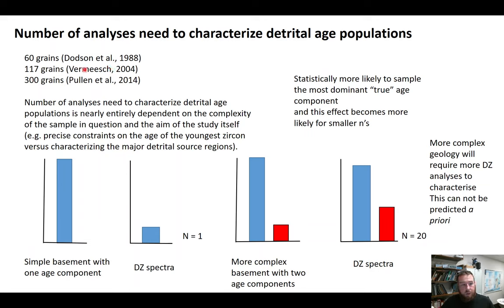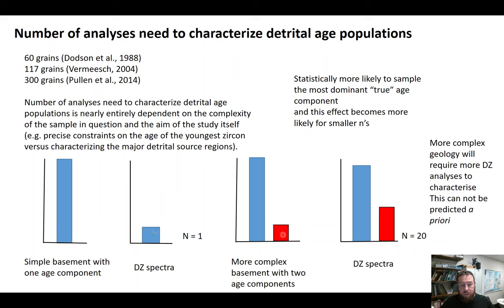For example, in 1988 a good rule of thumb was 60 grains; by 2004 we wanted 117 grains; and more recent work in 2014 says 300 grains are necessary. These are just simplistic models — they can't really be predicted because it depends on the complexity of the geology we're trying to capture. If we have a single basement component we only need one analysis, but a complex basement with multiple age components obviously needs more.